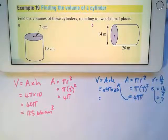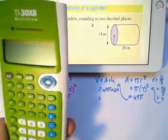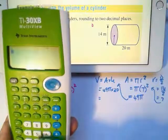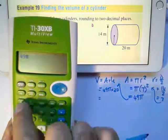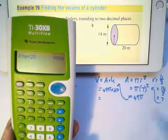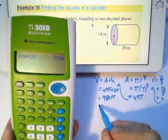I'm now going to do that on my calculator. I'm going to say 49π times 20. 49π times 20, my answer is 980π. That will be an exact value.